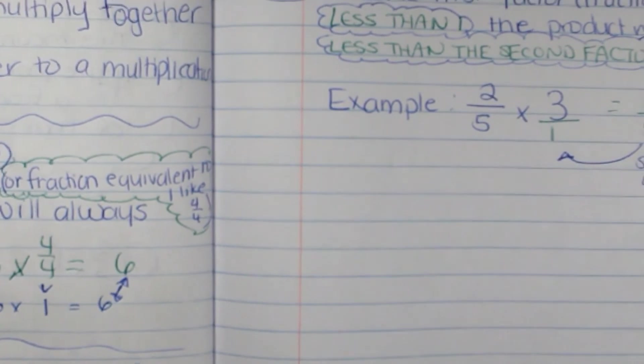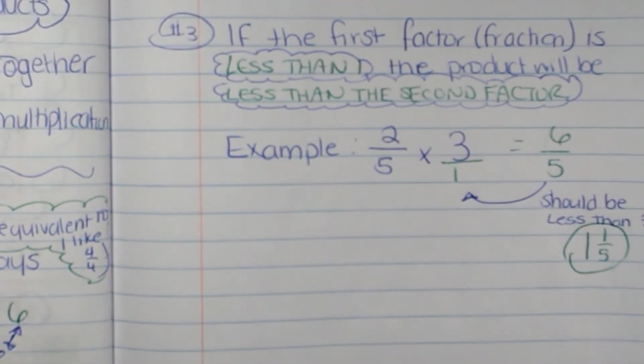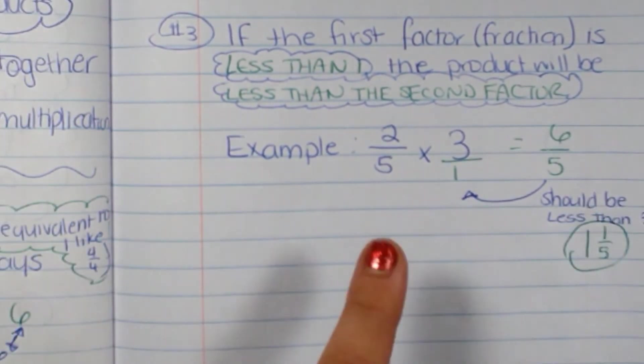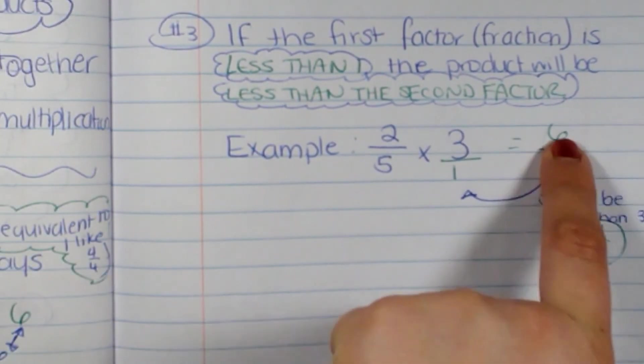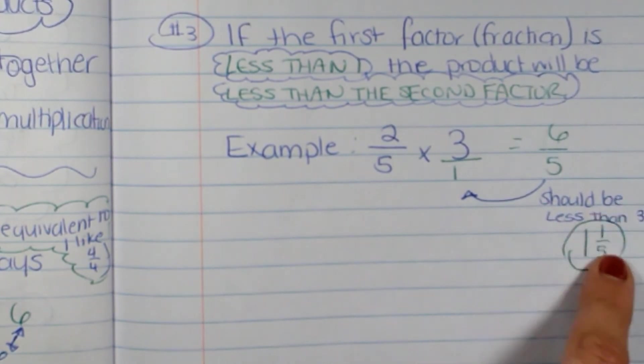So these are the rules that you should follow to compare factors and products. Let me go over this one more time. So six-fifths should be less than three. And it is, it's one and one-fifths.